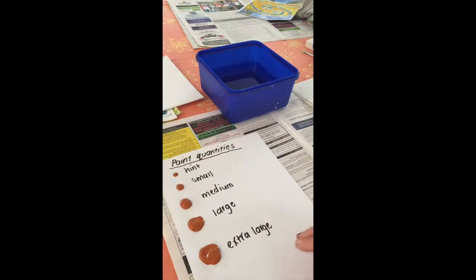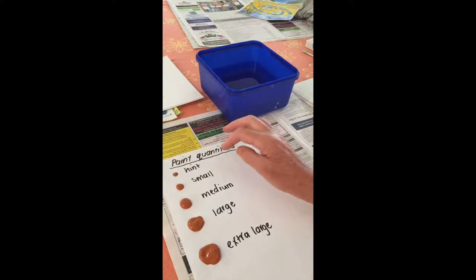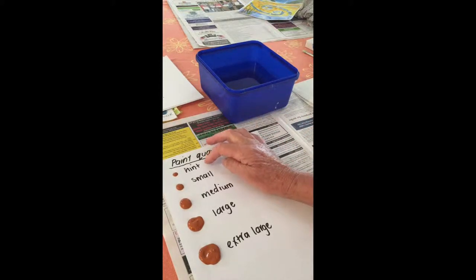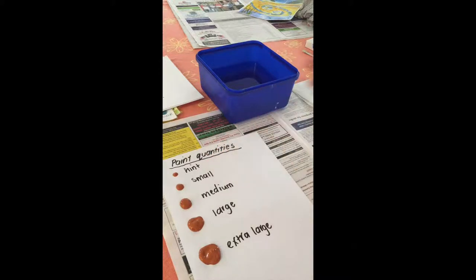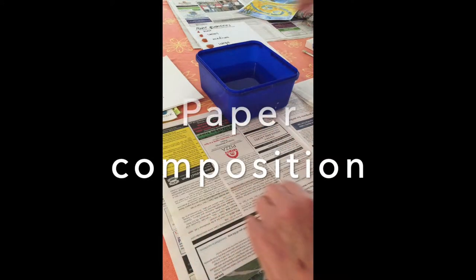Large is a couple of centimeters, and extra large is maybe about three centimeters. We'd only ever use extra large if we're using something like white or a lemon yellow. The hint, on the other hand, we would use only for very dark colors when we're trying to gray off a brighter color, say for the landscape where you've got hills. So we're talking about blacks and dark browns when we use a hint.